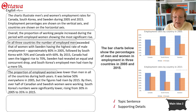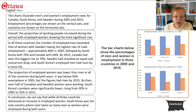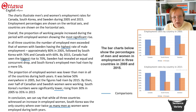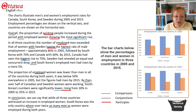Once we've done that, we go on to our concluding remark. Our conclusion says we can say that while all three countries witnessed an increase in employed women, South Korea was the only country where over twice as many men as women were employed during both years. In amongst that, we've got some nice sentence variety — comparisons, conjunctions that add variety, participles that give in-flow to the language, and some nice strong nouns.